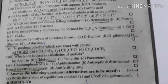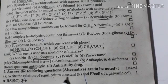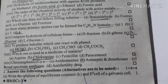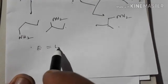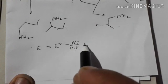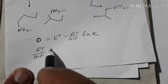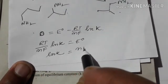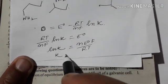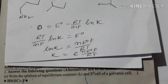Chloramphenicol is a broad-spectrum antibiotic. The question is to write the relation of equilibrium constant K and E°cell of the galvanic cell. The Nernst equation: E° = (RT / nF) ln K.